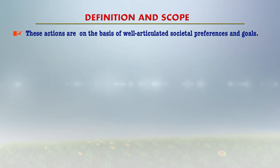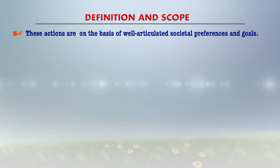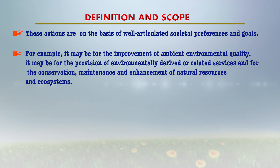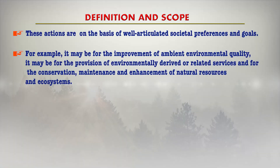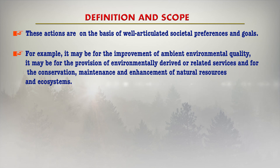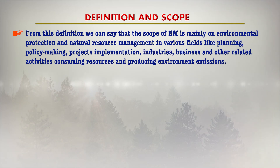These actions are based on well-articulated societal preferences and goals — for example, for the improvement of ambient environmental quality, ambient air quality, ambient water quality, or for the provision of environmentally derived or related services, various ecosystem services, conservation of natural resources, management of biodiversity, and maintenance and enhancement of natural resource and ecosystem. From this definition, we can say that the scope of environmental management is mainly on environmental protection and natural resource management.